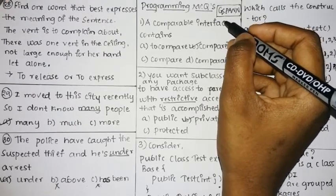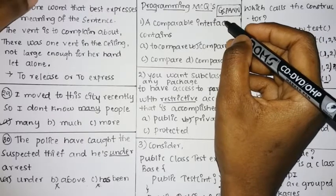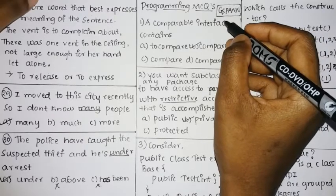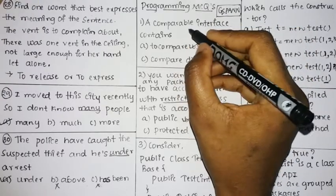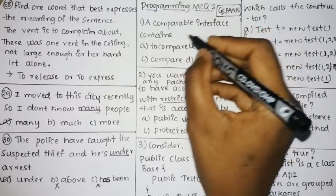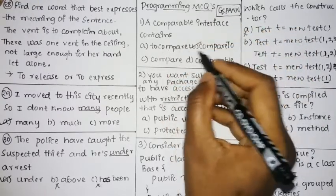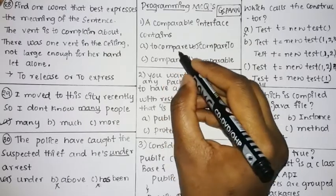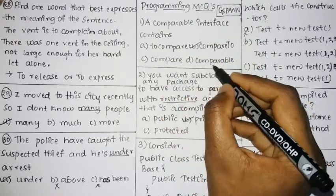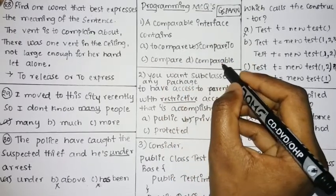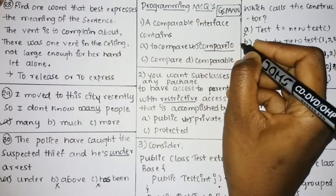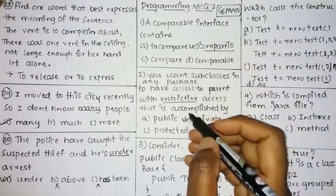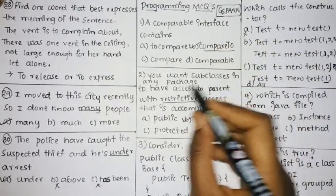Now we move to the programming MCQs — there are 10 questions. The first question: the Comparable interface contains which method to compare? The options are compareTo, compareAs, and comparable. The method for the Comparable interface is compareTo.